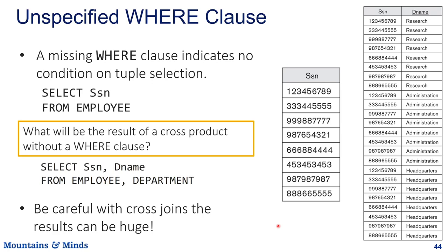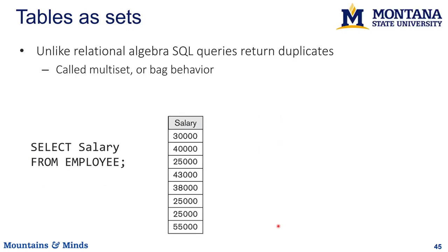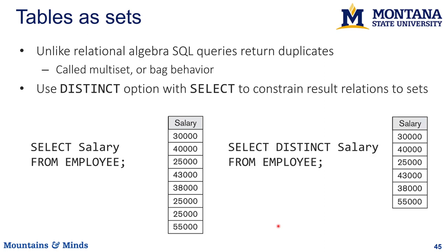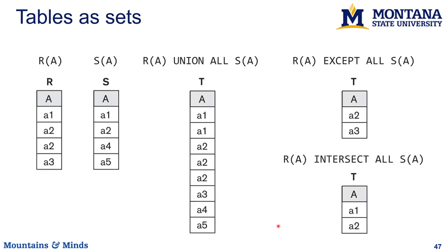Those things are called cross joins. You can also avoid duplicates by adding the DISTINCT keyword — for example, SELECT DISTINCT salary FROM employee returns only unique salary values. You can also treat query results as sets: UNION combines two result sets, and INTERSECT returns elements they have in common.